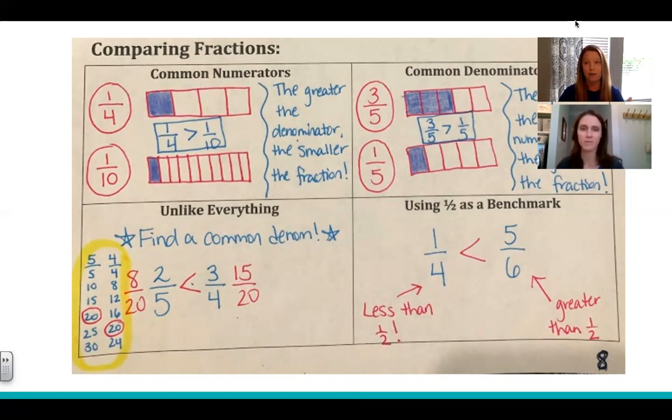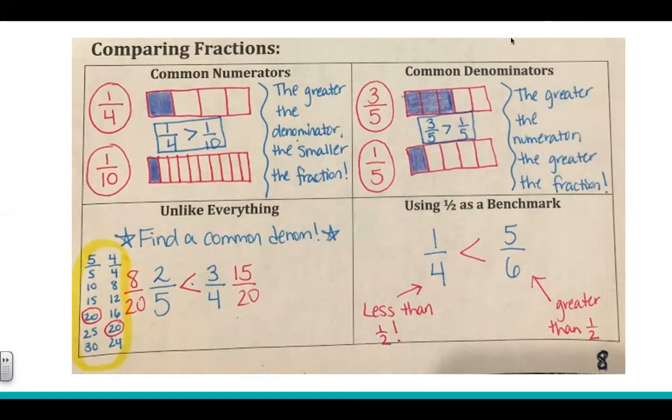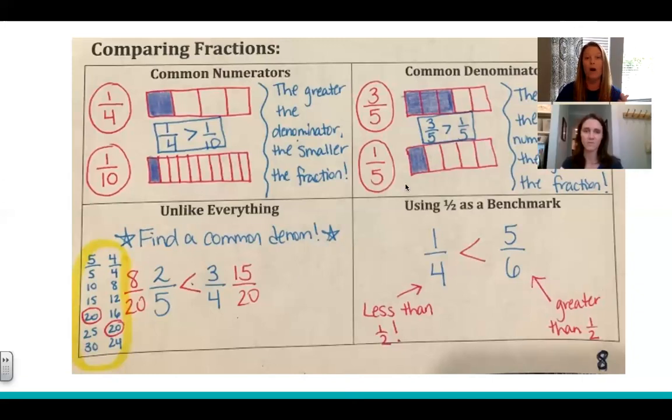We have a one in the numerator for one fourth and one tenth. So the rule for this one is the greater the denominator, the bigger the denominator, the smaller the fraction. Because if you're taking this equal size rectangle and cutting it into tenths instead of into fourths, that one tenth piece is way smaller than the one fourth piece. So the greater the denominator, the smaller the fraction. That works anytime you have a common numerator or the same number in the top. For common denominators, if your denominator is the same, you have three fifths versus one fifth. Now I've got equal size rectangles. They're both cut into fifths. So I can see that the numerator three of those fifths is larger than one fifth. So when the denominators are the same, the bigger the numerator, the greater the numerator, the greater the fraction, which brings us to kind of this bottom part. This is why we find a common denominator.